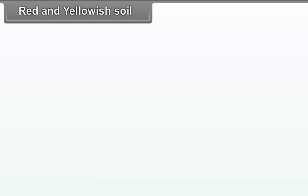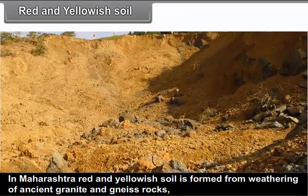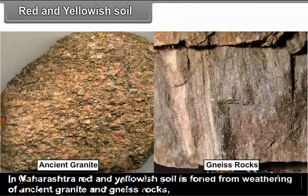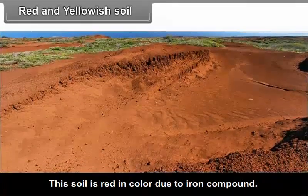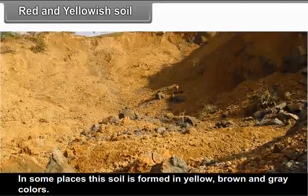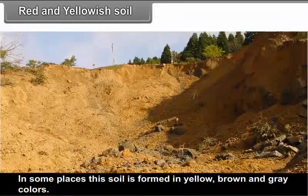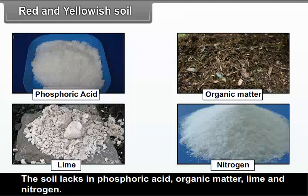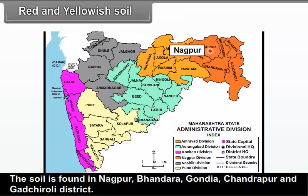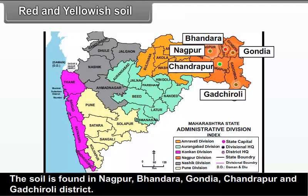Red and Yellowish Soil: In Maharashtra, red and yellowish soil is formed from weathering of ancient granite and gneiss rocks. This soil is red in color due to iron compounds. In some places, this soil is found in yellow, brown and grey colors. The soil lacks phosphoric acid, organic matter, lime and nitrogen. This soil is found in Nagpur, Bhandara, Gondiya, Chandrapur and Gadchiroli districts. Crops like bajra, groundnut, potato and rice grow well in this soil.